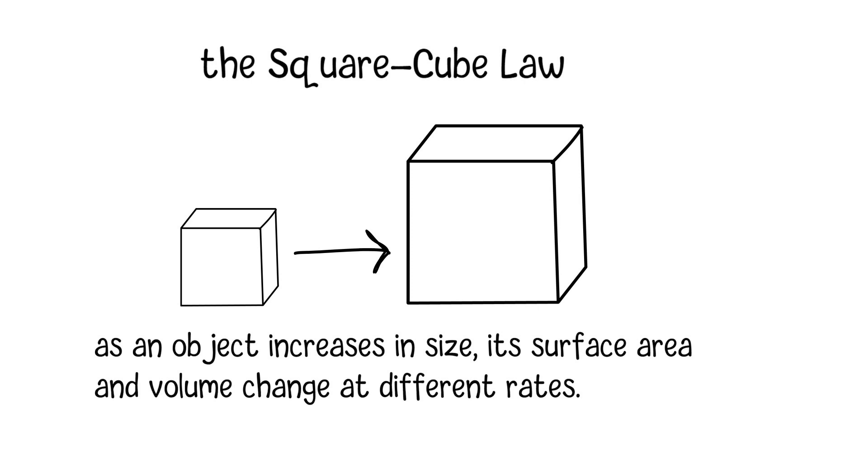To understand this better, let's take a closer look. Imagine we have a small cube and a larger cube. The small cube has a side length of 1 unit, while the larger cube has a side length of 2 units.